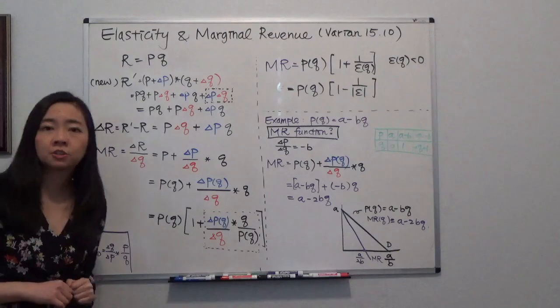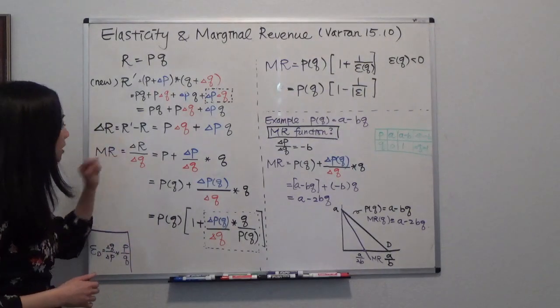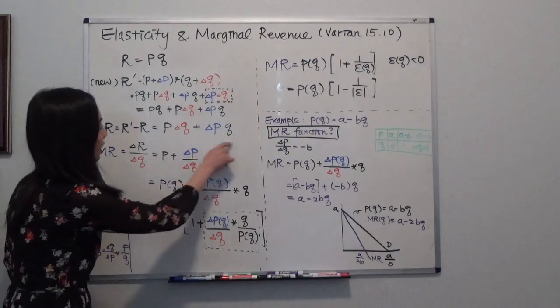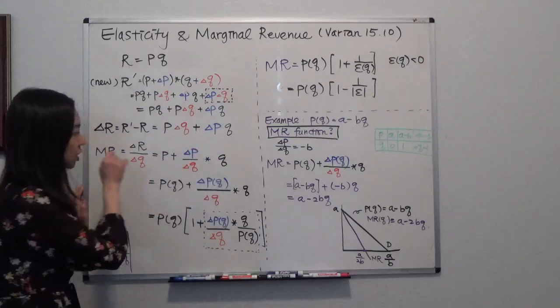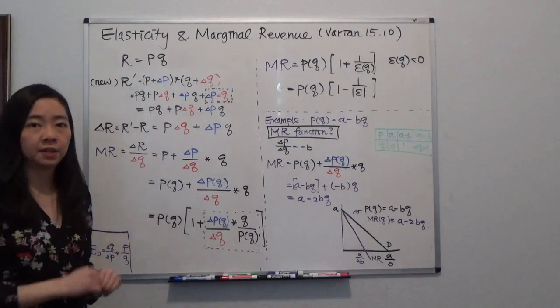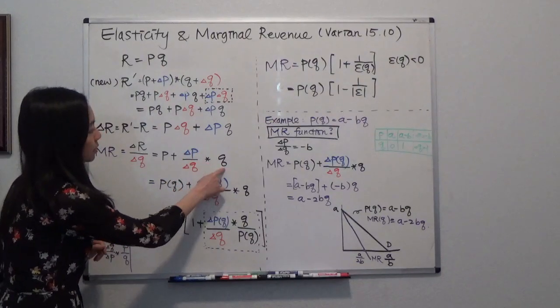Now what is the marginal revenue? We know by definition, marginal revenue is change in revenue divided by change in quantity. So I'm just going to divide this term by the change in quantity, and I'm left with price plus delta P divided by delta Q times your quantity.